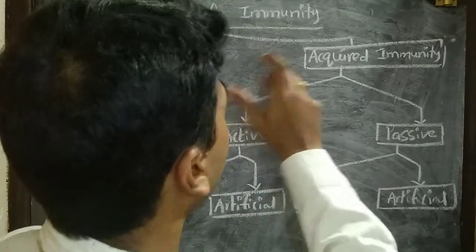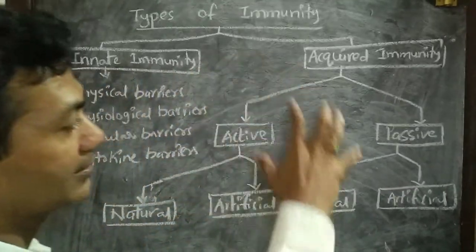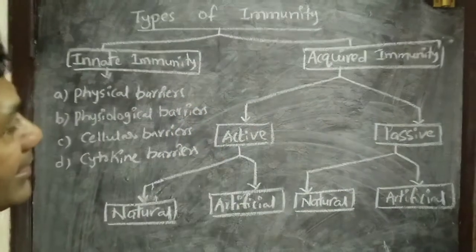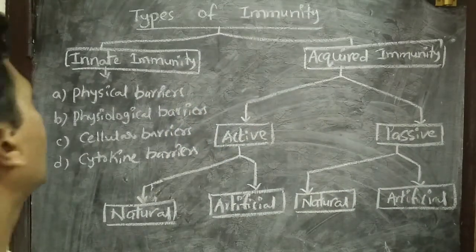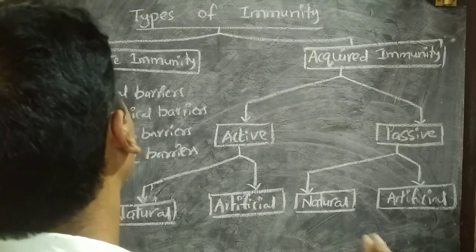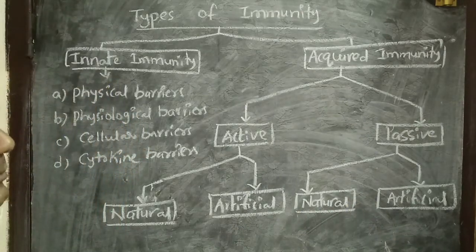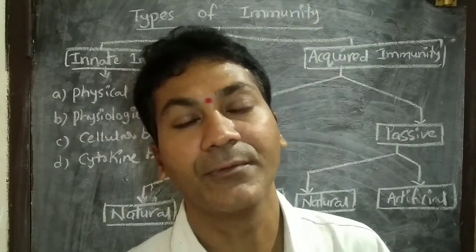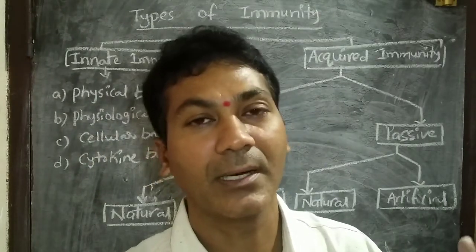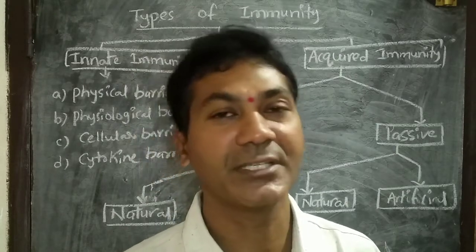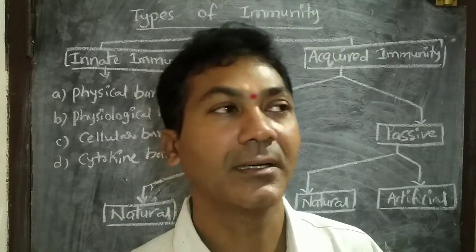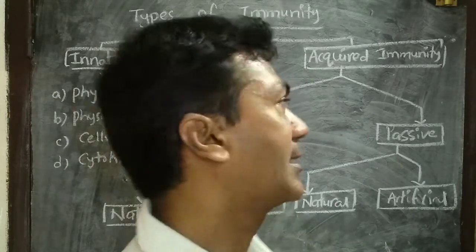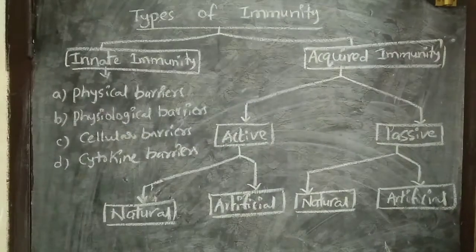Let us discuss the types of immunity in detail. The first is innate immunity — the immunity we get by birth. There is no specific defense mechanism pre-formed; instead, our physical structure and physiological mechanisms possess natural disease resistance power. Let us discuss what innate immunity includes.